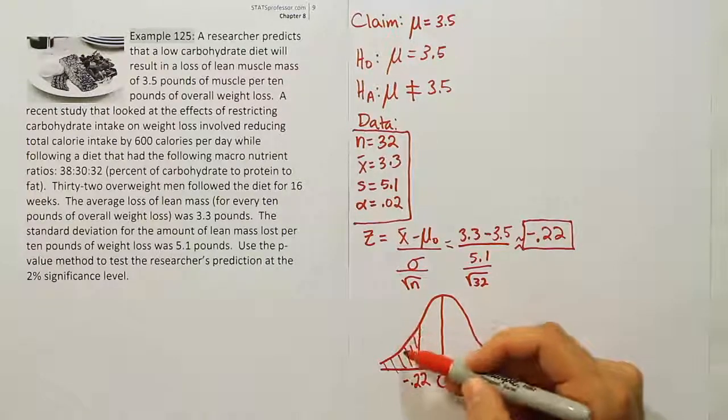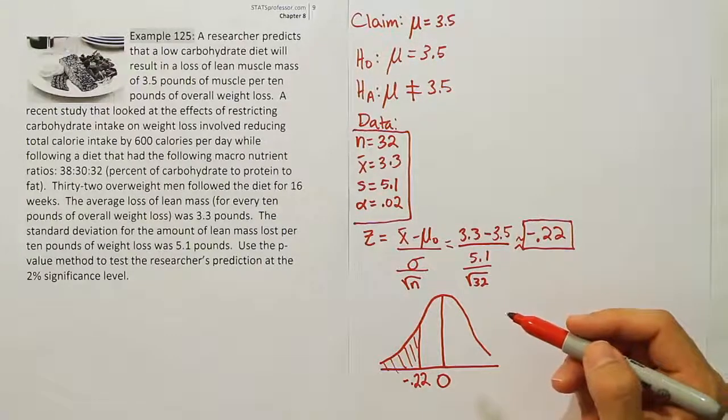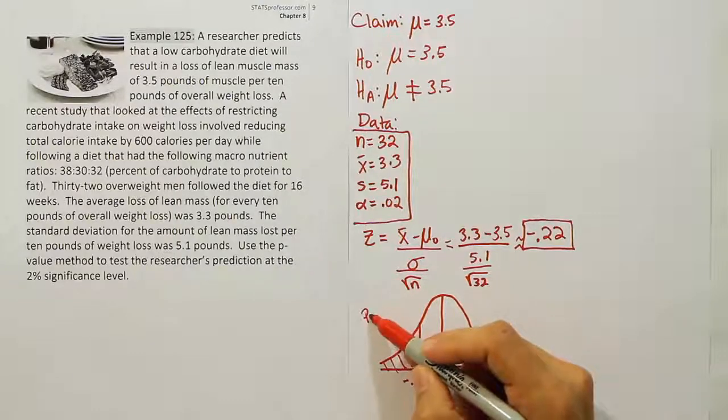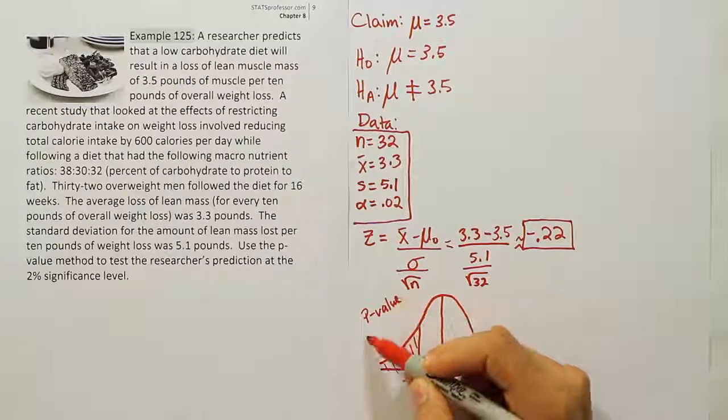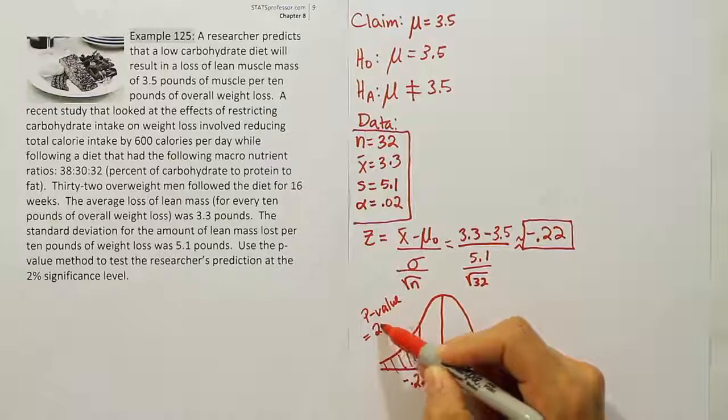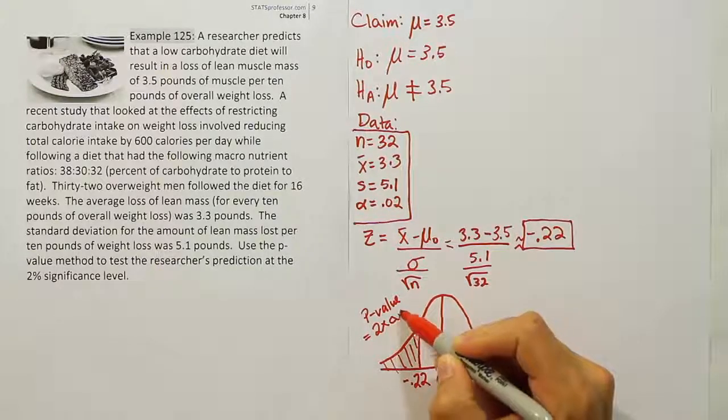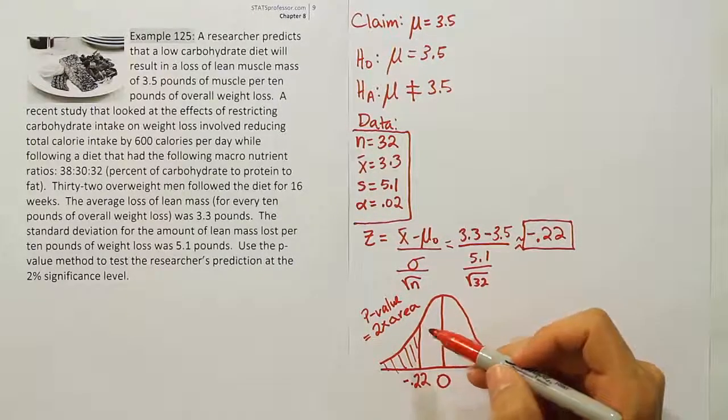Whatever answer we get for this area, we're going to double it. So the p-value equals twice the area here. The p-value is equal to two times the area.